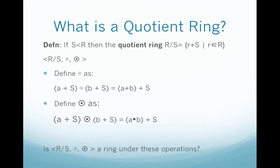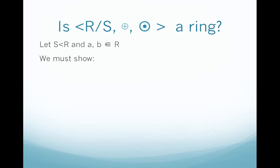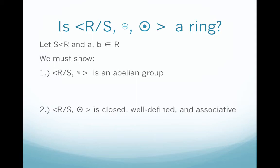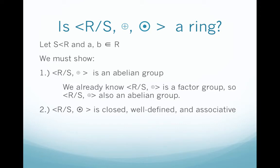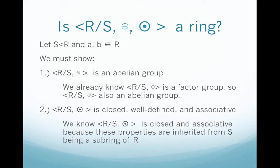But now we have to check if this is really a ring under these operations. In order to show that R mod S is actually a ring, we first have to show that our quotient ring over addition is abelian and that our quotient ring over multiplication is closed, well defined, and associative. R mod S over addition is really just a factor group, so we already know that it's abelian. And R mod S over multiplication is closed and associative because these properties get inherited from S being a subring of R. So what's left is to show that it's well defined.